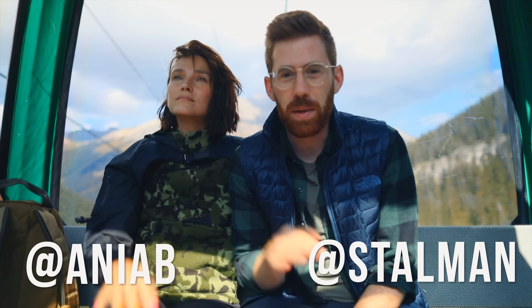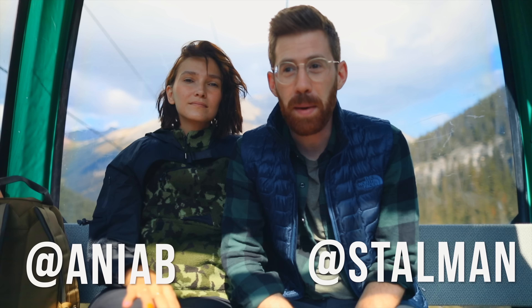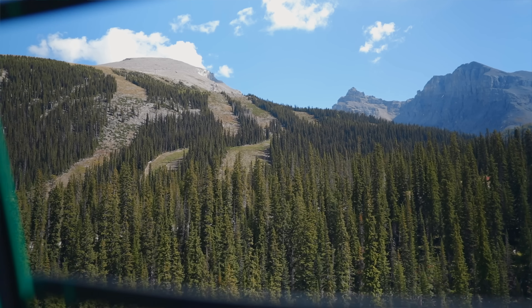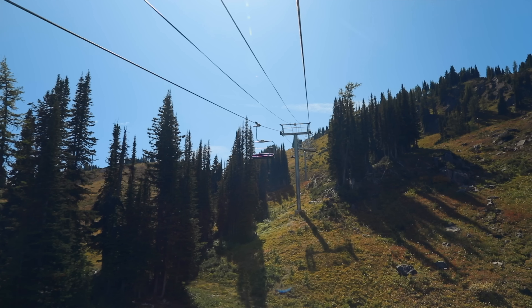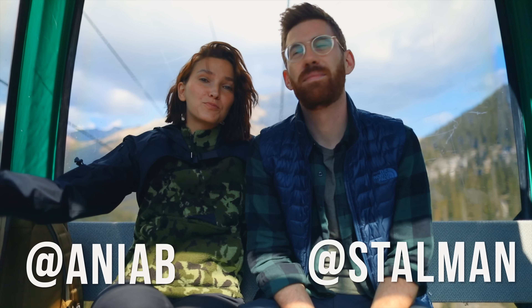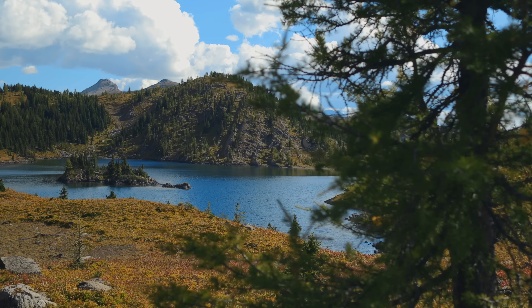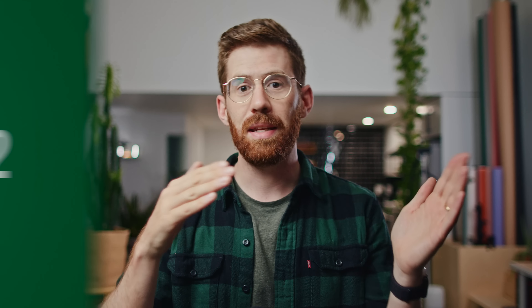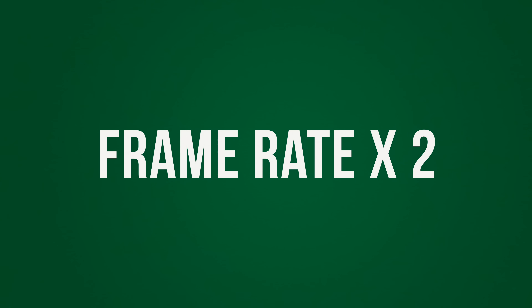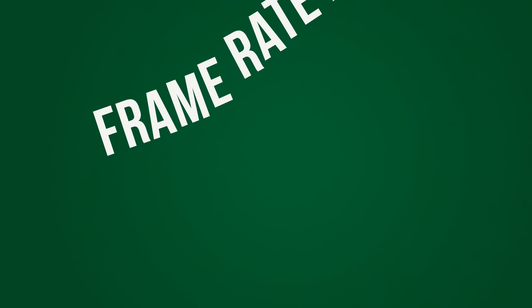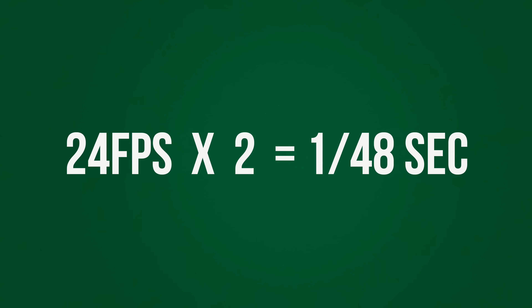We need some beautiful test footage so we came to Sunshine Meadows at Sunshine Village near Banff to do some hiking. It's their last weekend before they close it all down to prepare for ski season. In case this is your first time hearing about it, when you start shooting video you typically set your shutter speed to double the frames per second that you're shooting at. So typically I like to shoot at 24 frames per second — that's what this is right now — which means my shutter speed should be set to about 1/50th.